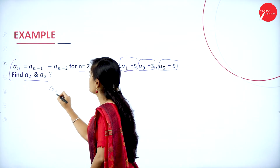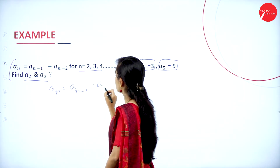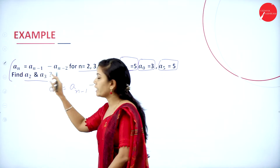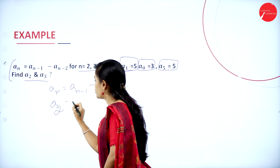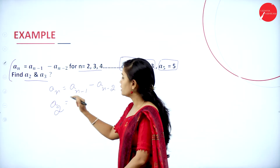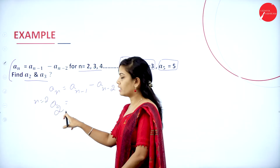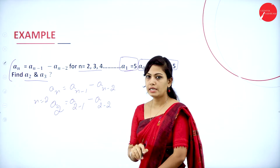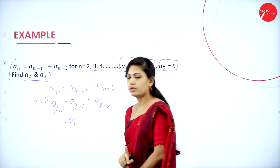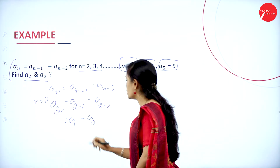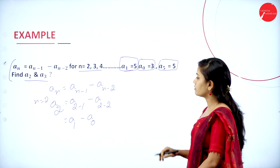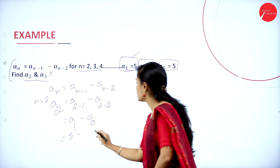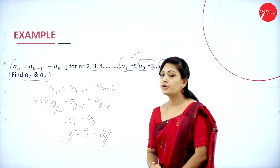We have the statement an = an-1 minus an-2. We know a1 and a0 but we have to find a2 and a3. For a2, substitute n = 2: a2 = a2-1 minus a2-2 = a1 minus a0. So a1 = 5 and a0 = 3, giving 5 minus 3 = 2. Therefore a2 = 2.